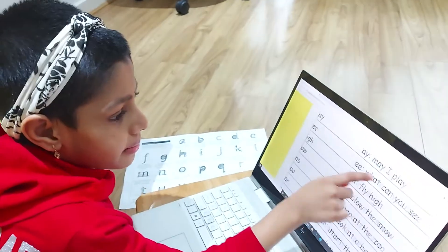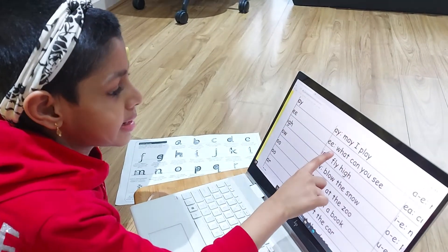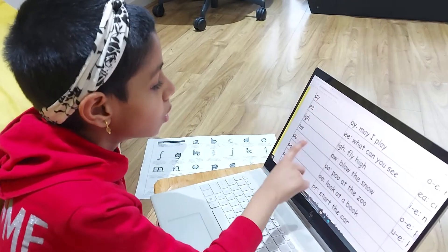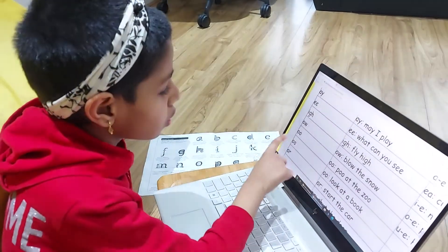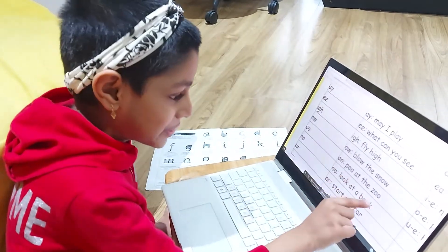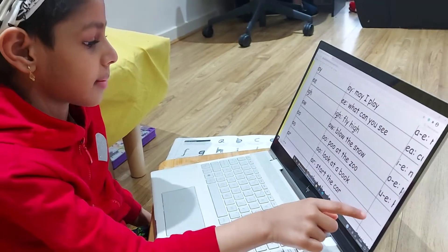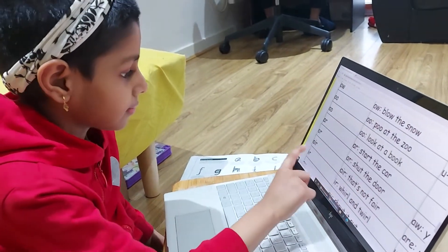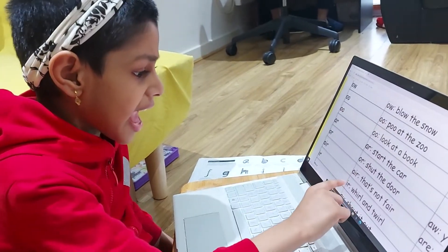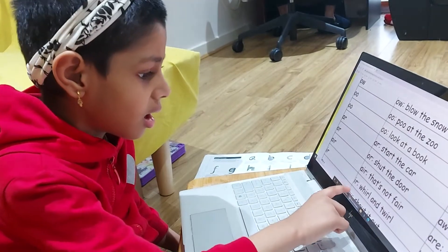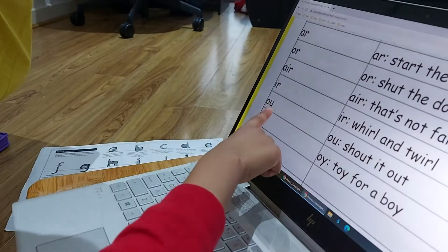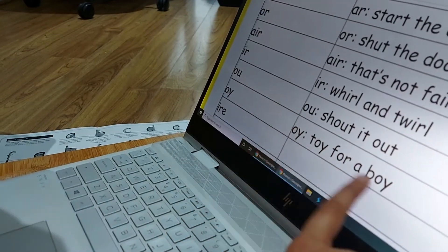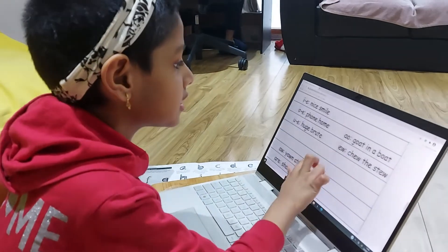She repeats the phonics sounds for practice: A - may I play, E - what can you see, I - I fly high, O variations - blow the snow and poo at the zoo, OO - look at a book, R - start the car, O - shut the door, E - that's not fair, O - more than twelve, O - shout it out, and toy for a boy. So that's it. Now let's go to set three.